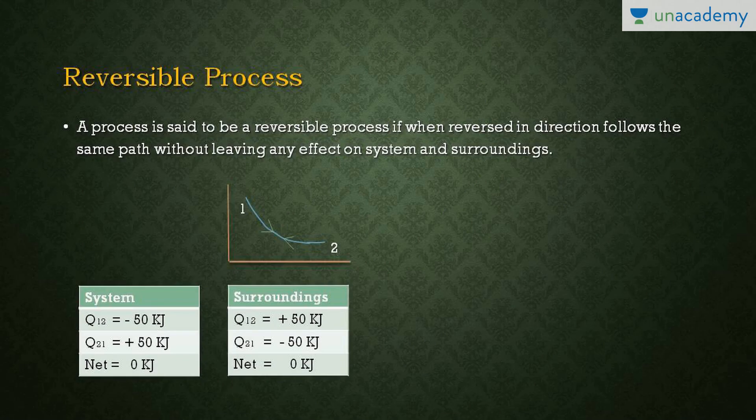To start with, what is a reversible process? Students are very much confused about what is a reversible process and what is an irreversible process. A process is said to be a reversible process if, when reversed in direction, it follows the same path without leaving any effect on the system and surroundings.